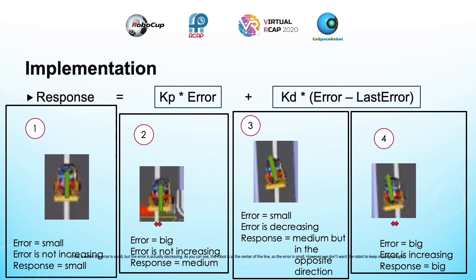In the third case, the error is small but the error is actually decreasing. The robot is at the center of the line, so the error is small. However, we don't want the robot to keep moving straight because if it does, it is going to overshoot and hit the left side of the line. What we want is for the robot to turn right by a medium amount so it will end up moving parallel to the line. In the fourth case, the error is big and the error is also increasing. The robot is on the left side of the line, and the error is going to keep increasing because the robot is facing away from the line. We want the response to be big so the robot can quickly turn right and go back to the line.